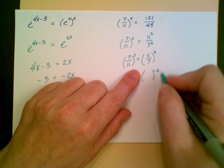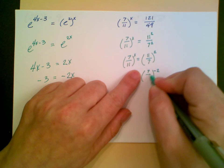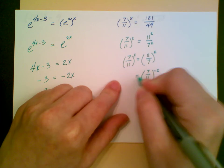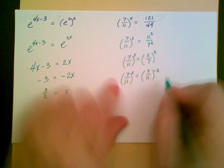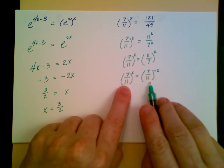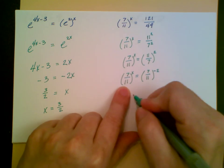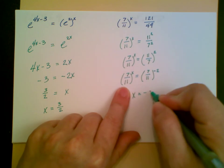That means I need to take the reciprocal of the inside and then I have the same base as on the left-hand side. I have 7 elevenths to the x equals 7 elevenths to the negative 2, and so x is equal to negative 2.